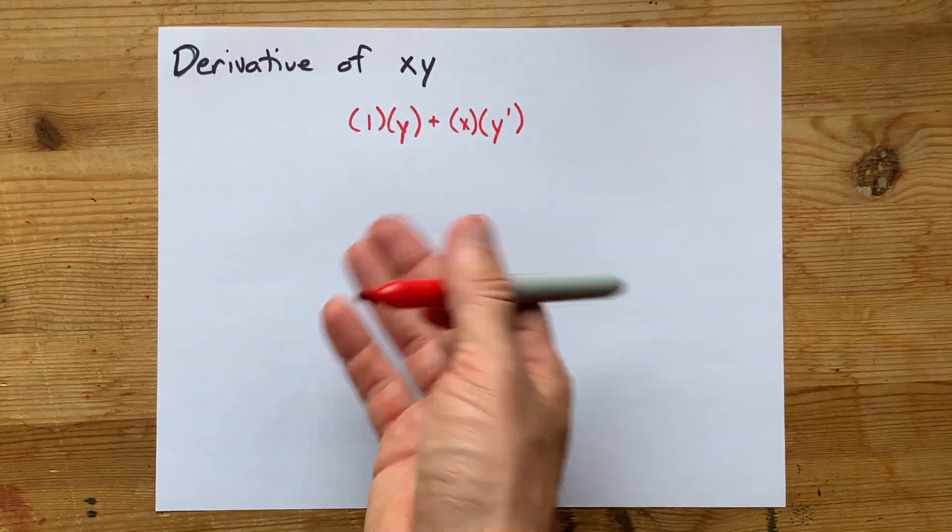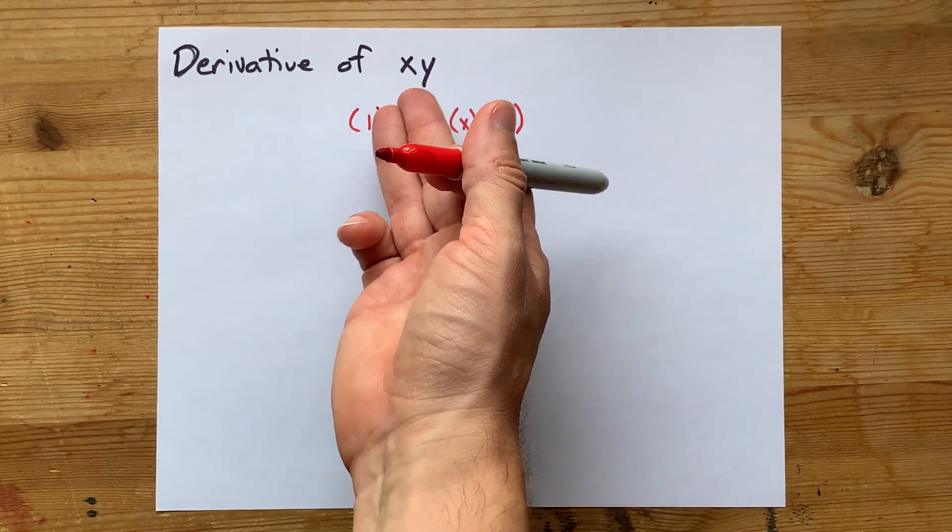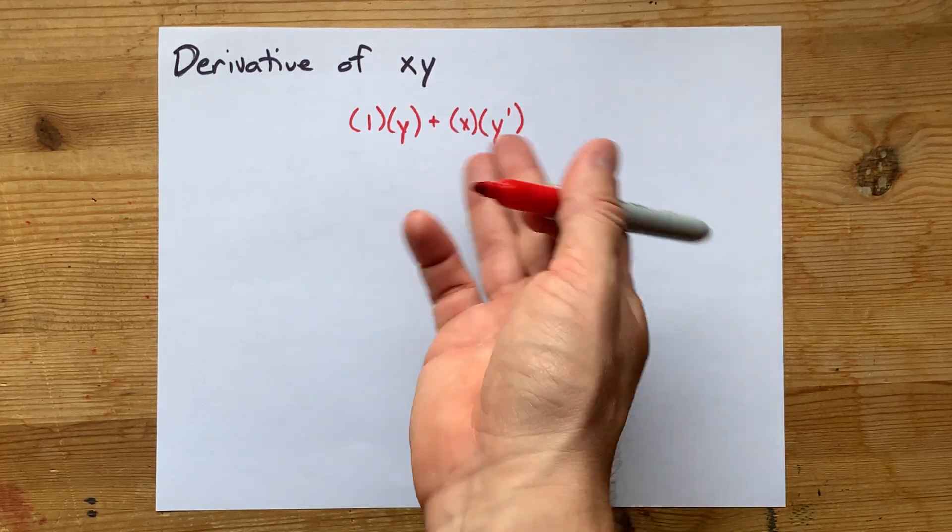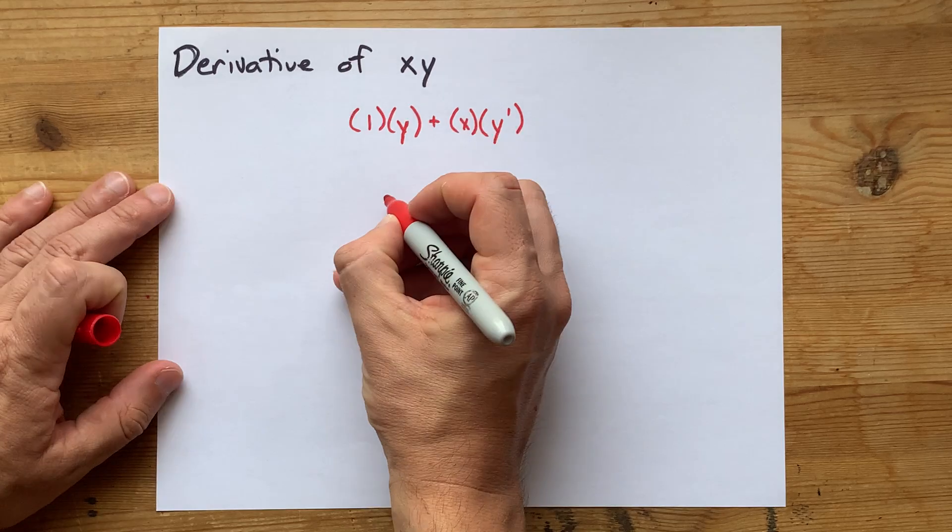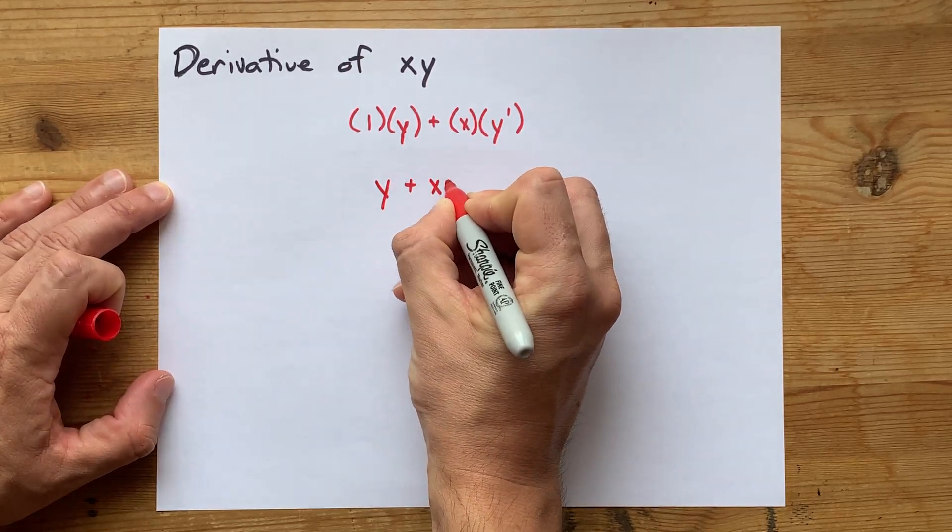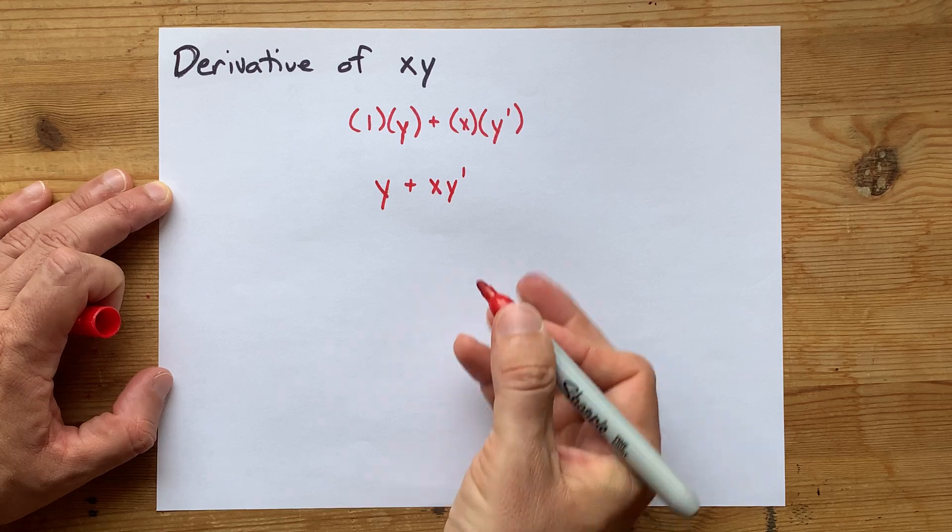This is all we can do. Usually, if I was told that x times y equals something, then I'd be able to solve for y prime here, but you can't. All you have is y plus x times y prime.